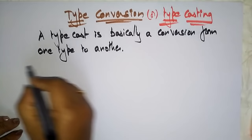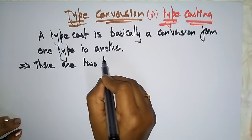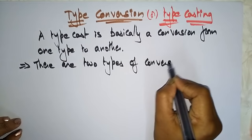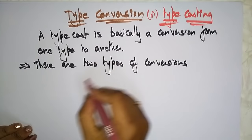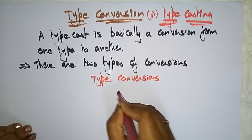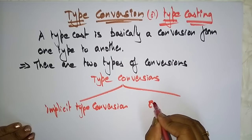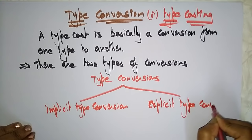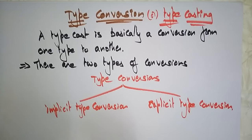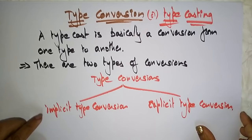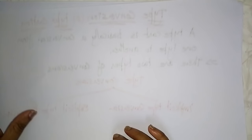There are two types of conversions. The first is implicit type conversion and the second is explicit type conversion. So a type cast is basically a conversion from one type to another type, and these are the two categories.